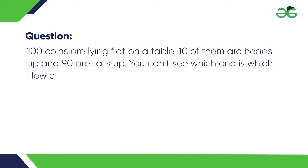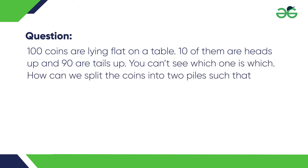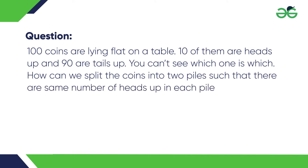You can't see which one is which. How can we split the coins into two piles such that there are the same number of heads up in each pile?